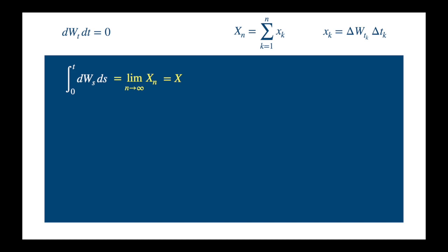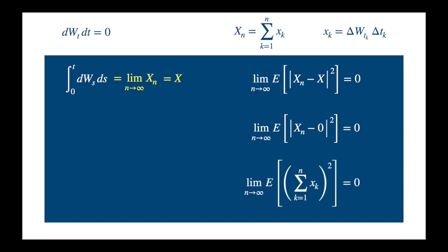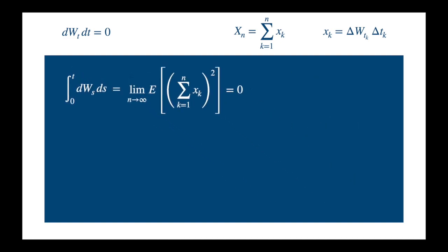We say the sequence X_n converges to x in the mean square, if the expected value of the squared deviation from x goes to 0 as n becomes very large. We are claiming that our sequence converges to 0, so we replace x by 0. And now we can replace X_n by the sum. And we are done with the capital X. We only introduce this symbol so that we can see all we are doing is taking the limit of a sequence in some sense.